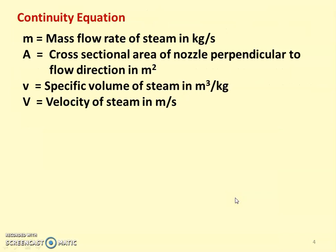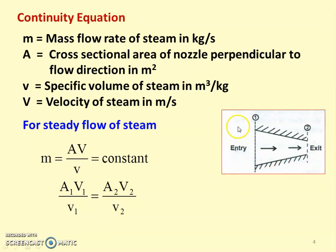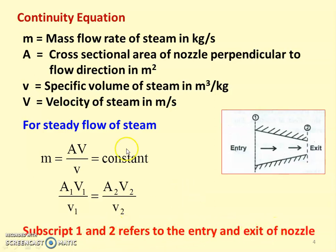We take the continuity equation for the nozzle. We are going to use the continuity equation and energy equation to calculate the design parameters, particularly area and velocity at the exit of the nozzle. M is the mass flow rate in kg/s, A is the cross-sectional area perpendicular to flow in m², small v is the specific volume in m³/kg, and capital V is the velocity in m/s. For steady flow: M = AV/v = constant. At inlet and outlet: A1·V1/v1 = A2·V2/v2, where subscripts 1 and 2 refer to entry and exit.